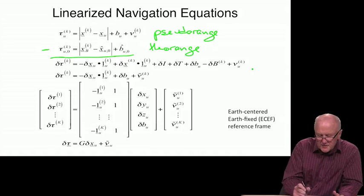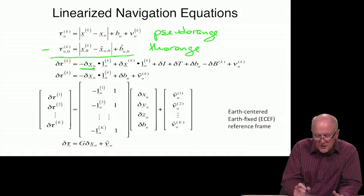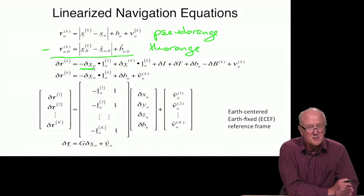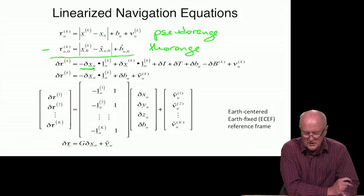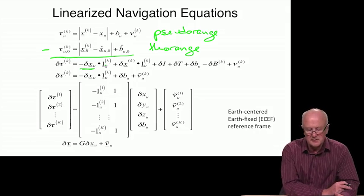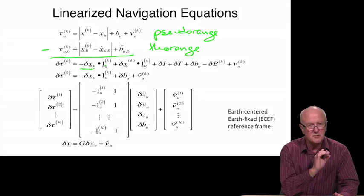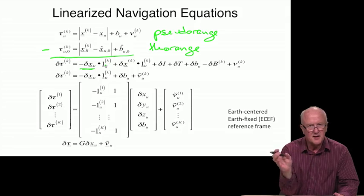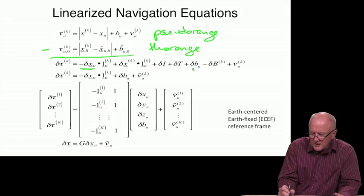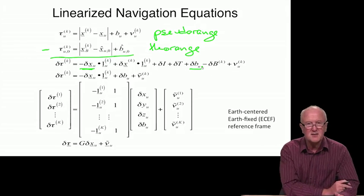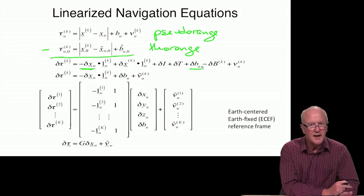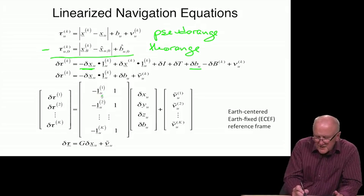When linearized, we discover that the estimanda that we care about, the three-dimensional vector which connects the assumed location to the true location, dotted with the line of sight. When we were using east, north, up, that appeared as a sequence of terms of the form cosine l, sine as, cosine l, cosine as, sine l. And then, out here is the last remaining estimanda, delta b_u. And it had the coefficient 1, and these things appear here.